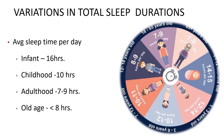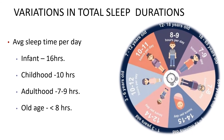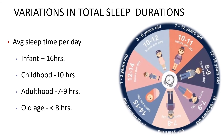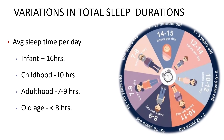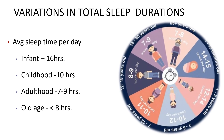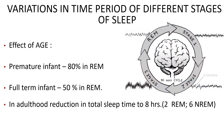Variations in sleep duration by age: during infancy, 16 hours; during childhood, 10 hours; during adulthood, 7 to 8 hours; during old age, less than 8 hours. Effect of age on stages: preterm infants spend about 80 percent of sleep time in REM sleep; full-term infants spend 50 percent in REM sleep. In adulthood, with reduction in total sleep time to about eight hours, approximately two hours are in REM sleep and six hours in non-REM sleep.